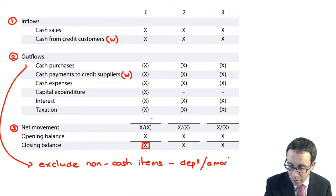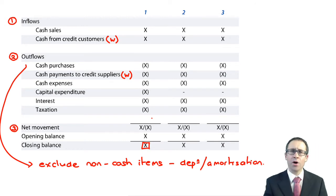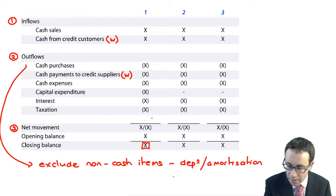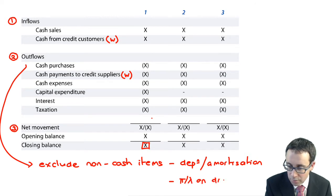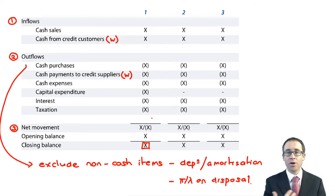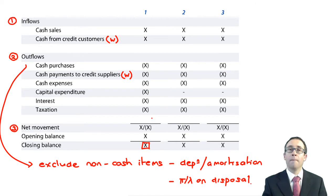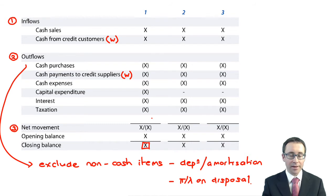The same process as depreciation is your amortization — that's a non-cash expense charged on intangibles as opposed to tangibles. And don't forget your profit or loss on disposal — again, that's a non-cash item, so you do not include the profit or loss. But you would include the proceeds.